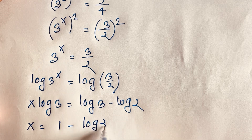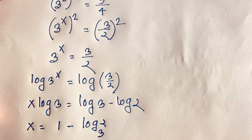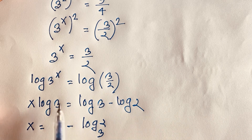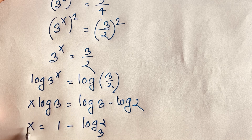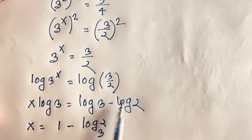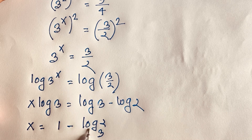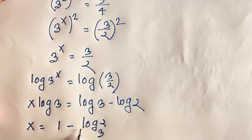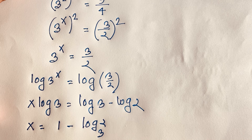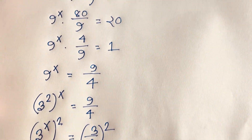Dividing both sides by log 3, we get x equals 1 minus log 2 divided by log 3, which equals 1 minus log base 3 of 2. The log 3 terms cancel, giving x log 3 over log 3 equals 1, and log 2 over log 3 equals log₃(2). So our final answer is x equals 1 minus log base 3 of 2. Let's verify this.